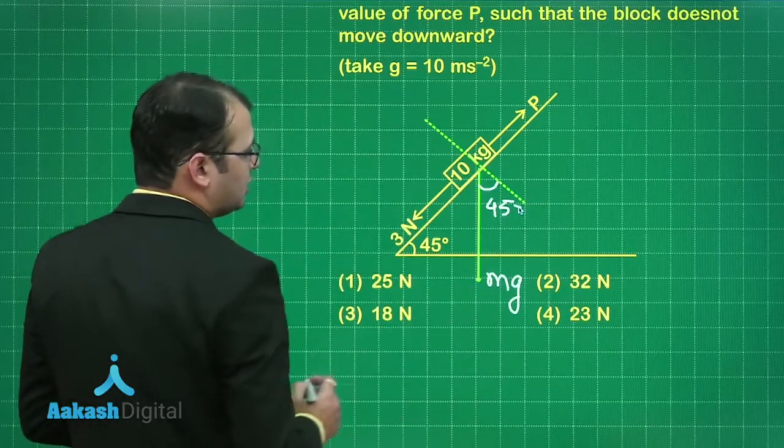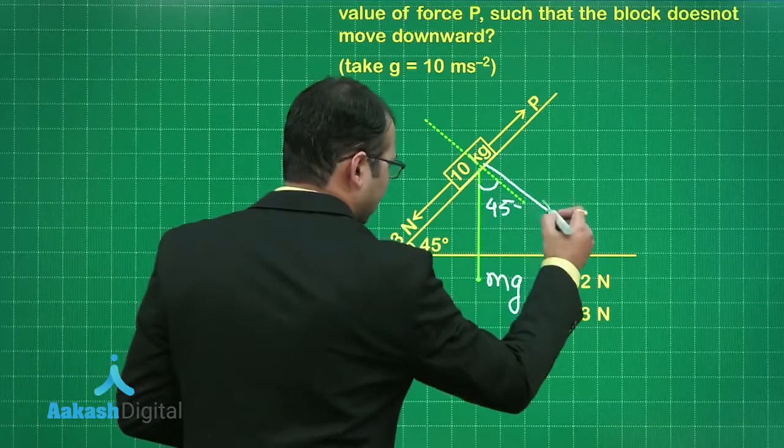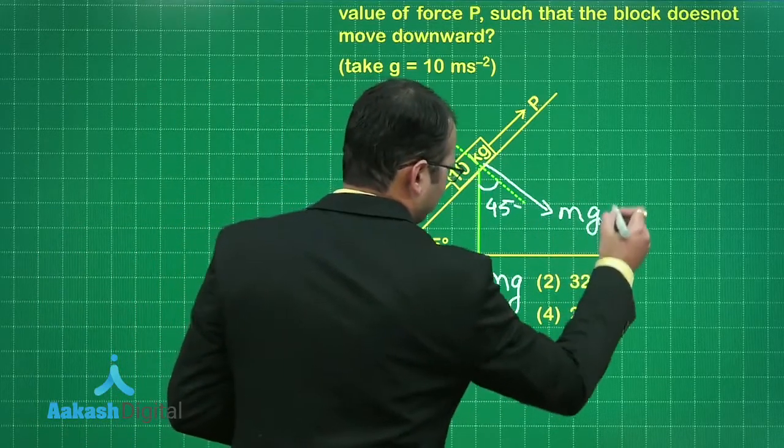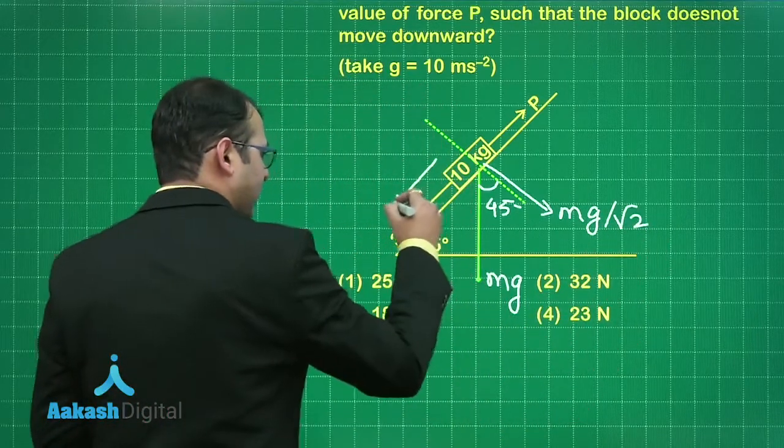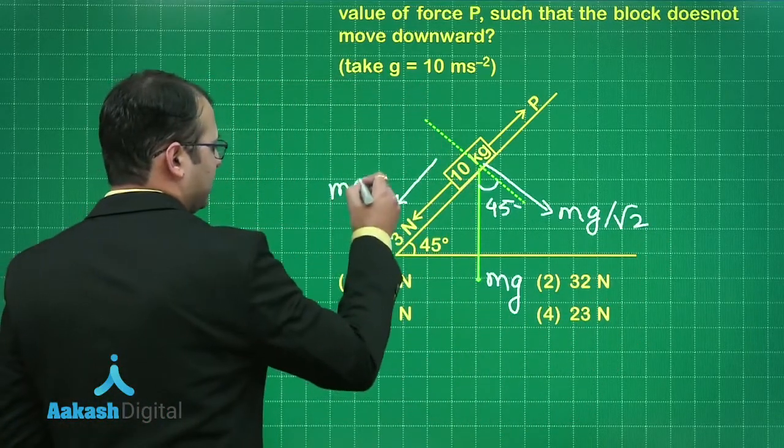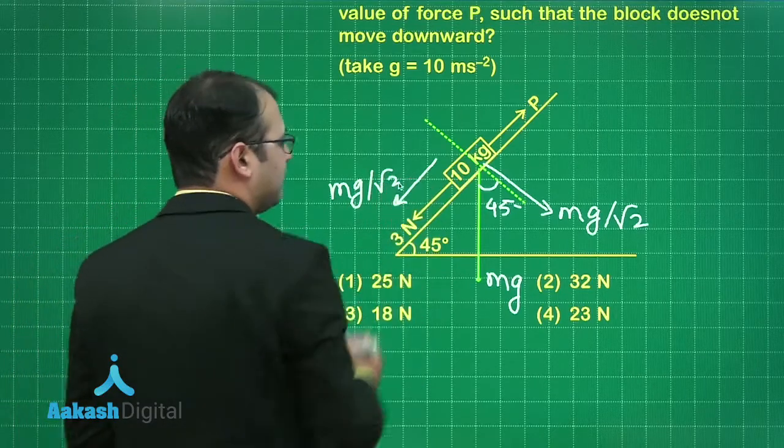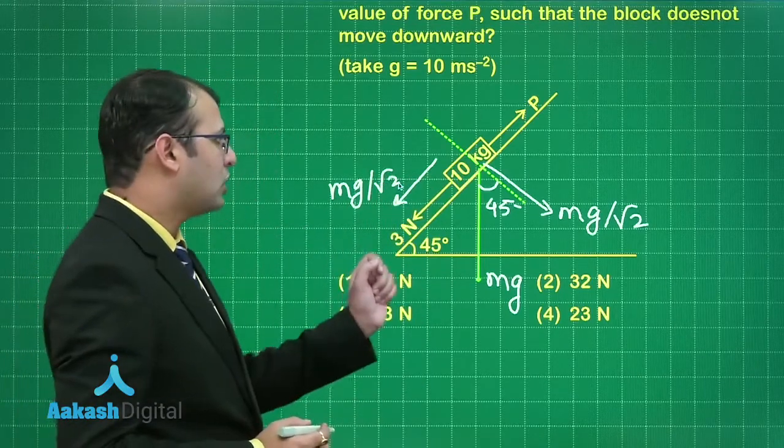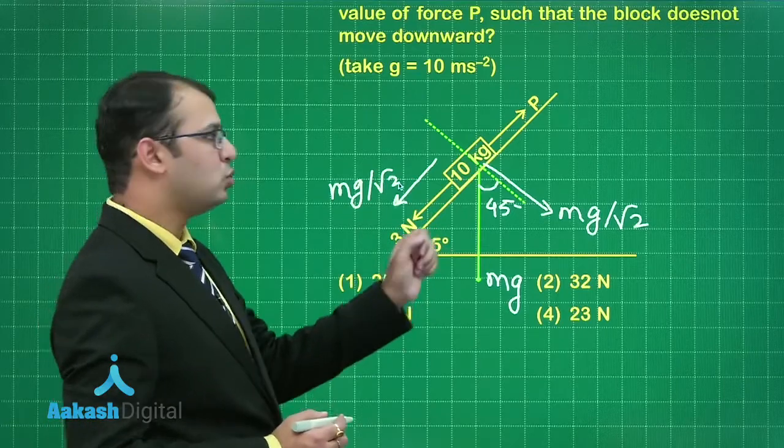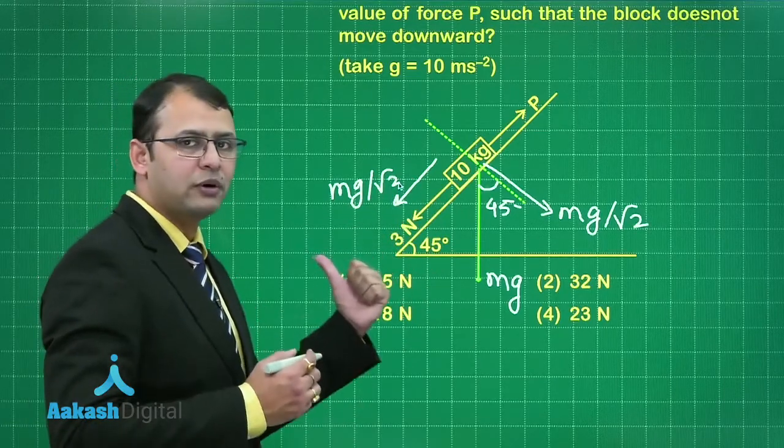On resolving this Mg downwards I'll get Mg cos 45 that is Mg by root 2 and here will be Mg sin 45 again I'll write Mg by root 2, and this block is having a tendency to move downward and I have to stop it by doing so.